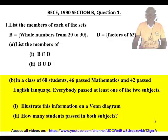In a class of 60 students, 46 passed Mathematics and 42 passed English Language. Everybody passed at least one of the two subjects. (i) Illustrate this information on a Venn diagram. (ii) How many students passed in both subjects?